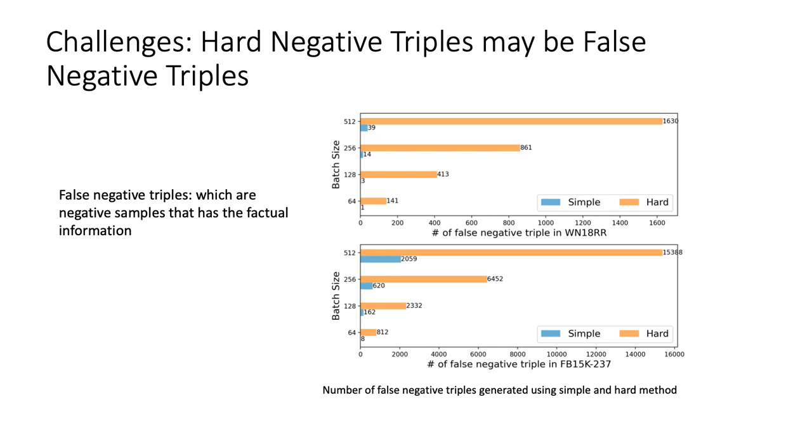But the challenge is we know that hard InfoNCE will generate some mistakes, which are negative samples but have factual information. We will generate more false negative samples with hard InfoNCE than with simple InfoNCE.